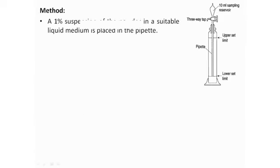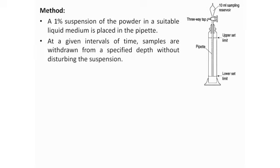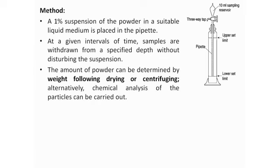A pipette is located centrally in the cylinder and it is held by a ground glass stopper. The tip coincides with the zero level. A three-way tap allows fluid to be drawn into the 10 ml reservoir which can be emptied into the beaker using a centrally fused tube. Let's perform the method. Prepare a 1% suspension of the powder in a suitable liquid medium and it is placed in the pipette. At a given interval of time, the samples are withdrawn from the specified depth without disturbing the suspension. The amount of the powder can be determined following drying and centrifuging. Alternatively, chemical analysis of the powder can be carried out.